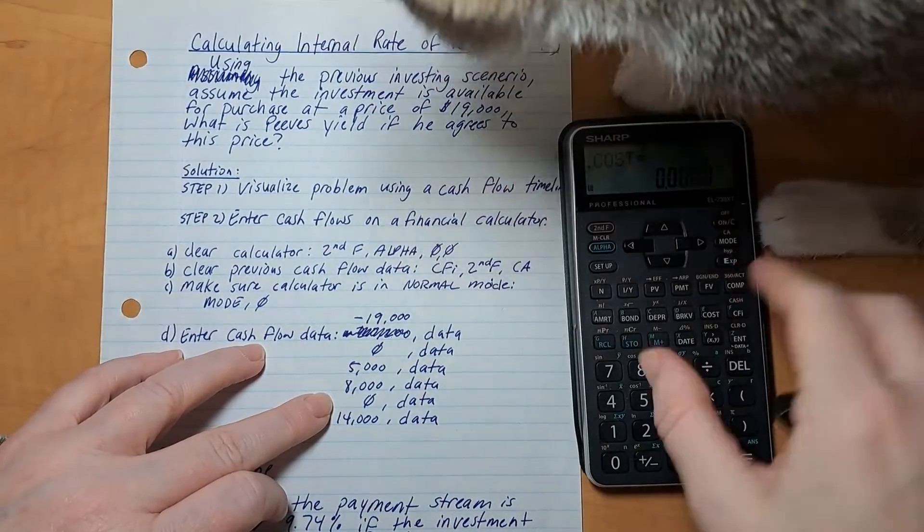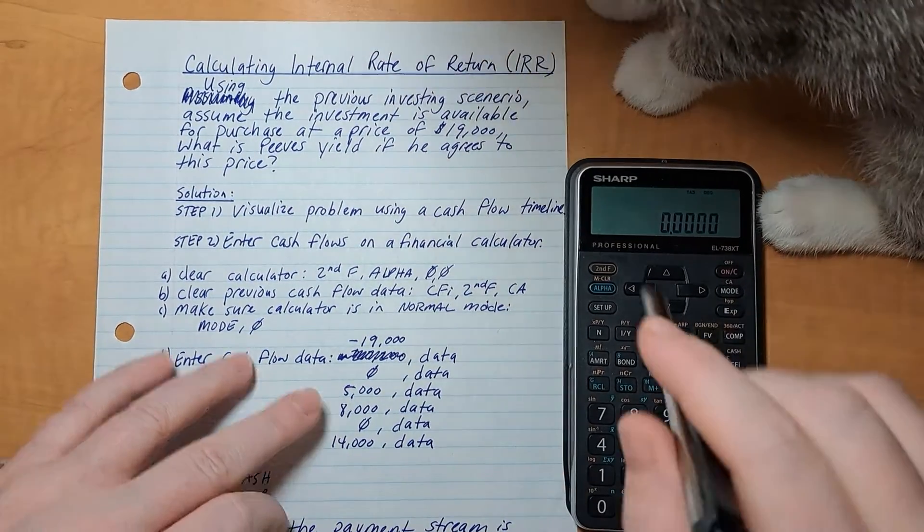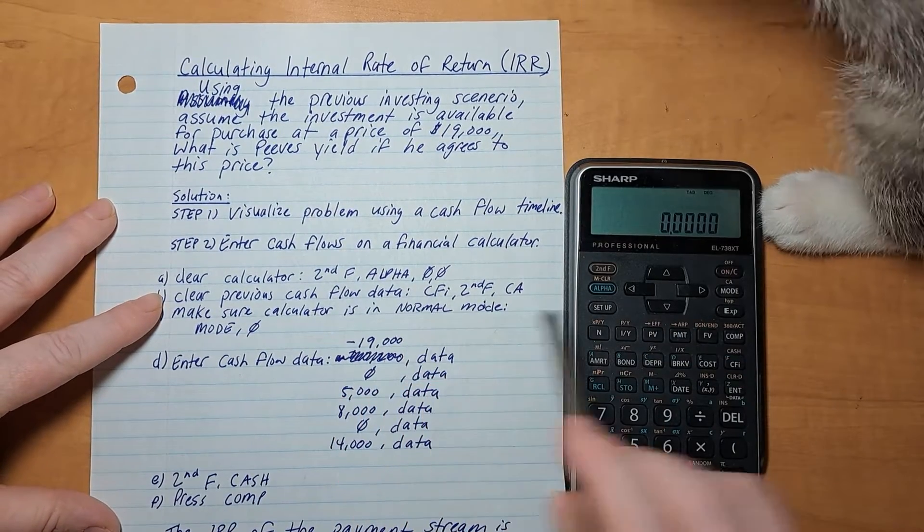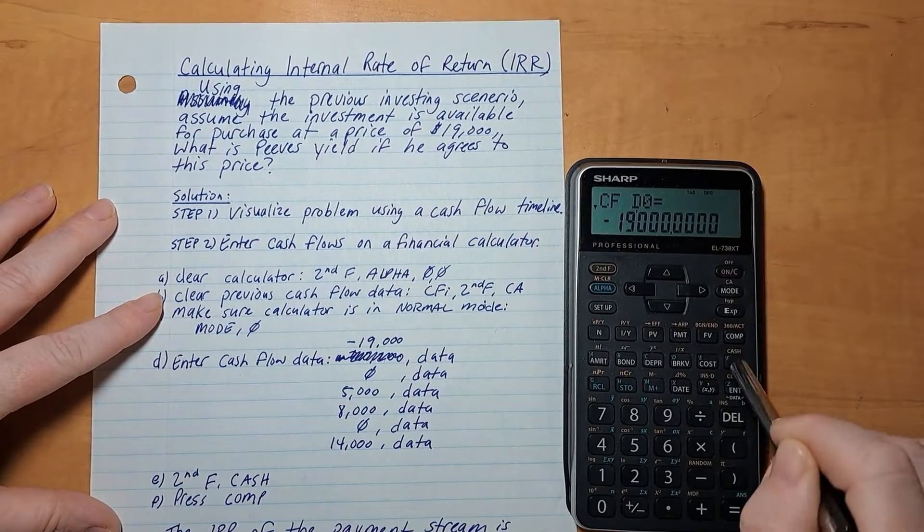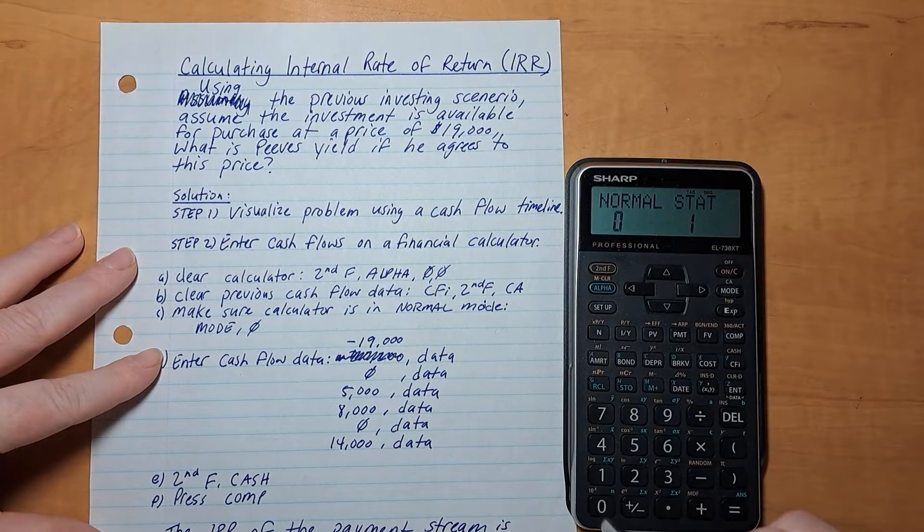Buster. Uh oh, we need to start over because Buster got into that one. So let's clear the cash flow again, just to make sure. Second function, or CFI rather, second function CA, and let's start this again. It's normal mode zero.